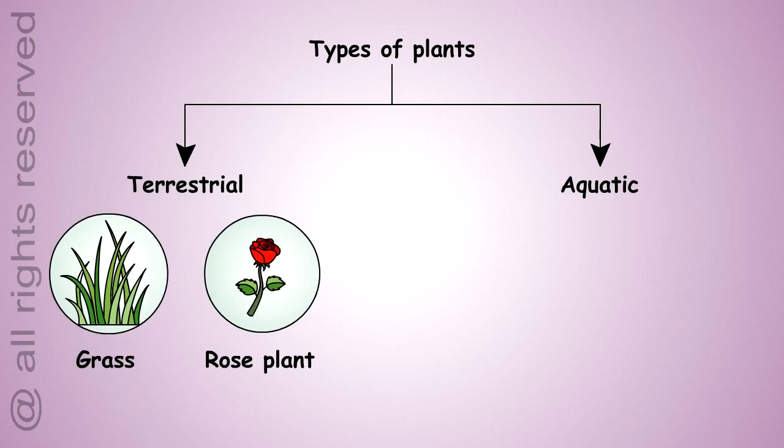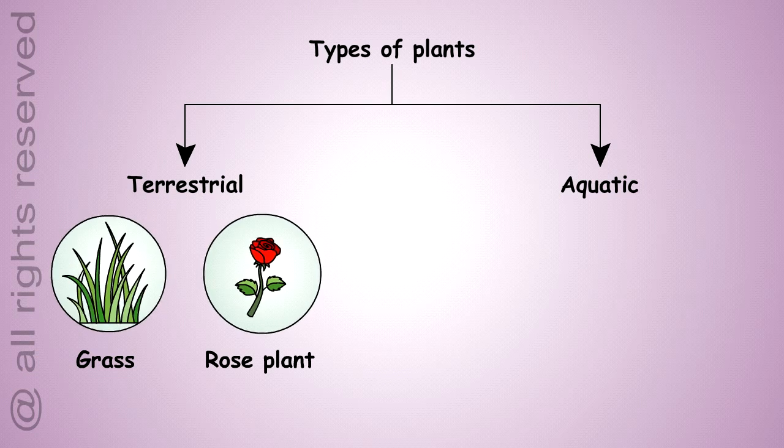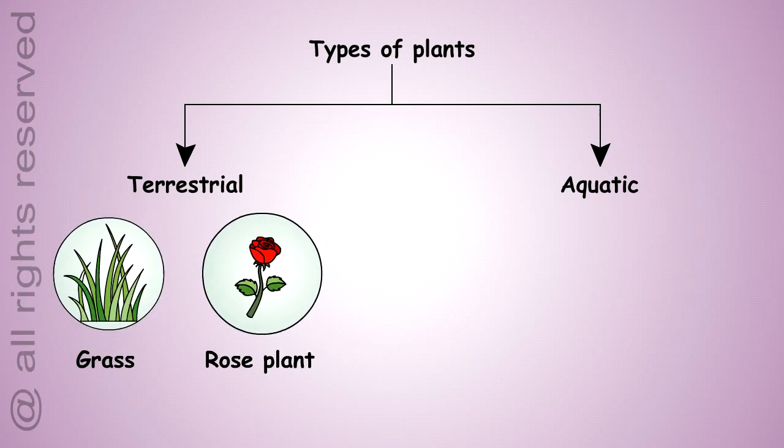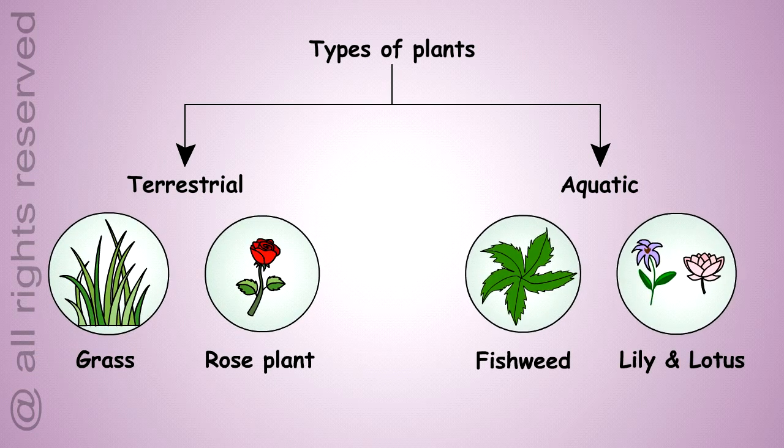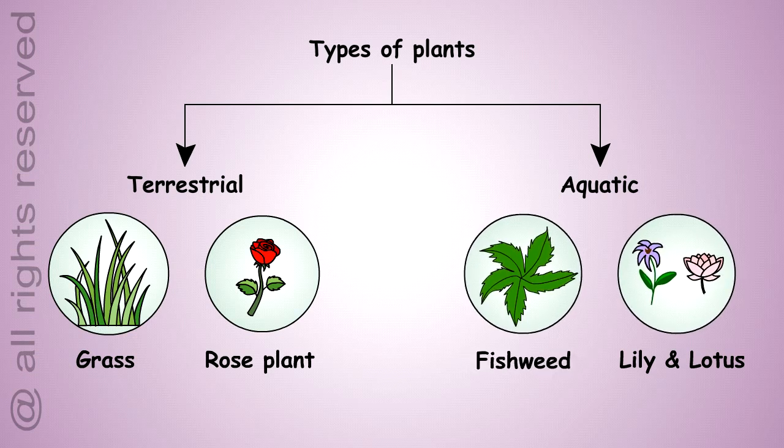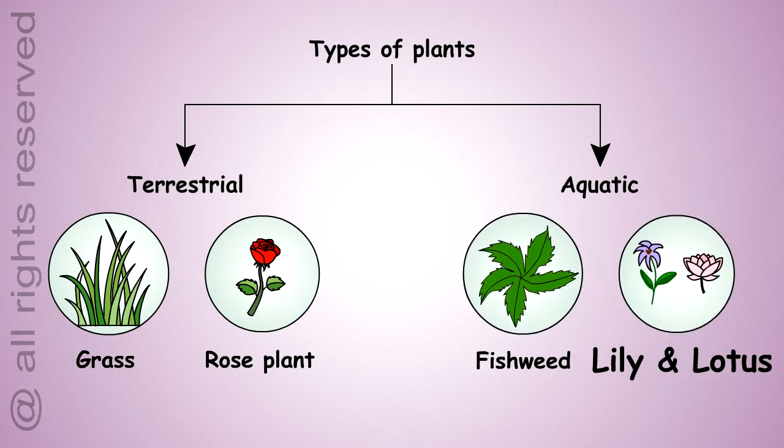Terrestrial plants are those plants that grow on land, like terrestrial grass and the rose plant. Aquatic plants are those plants that grow either fully submerged in water, like fishweed, or on the surface of water, like water lily and lotus.